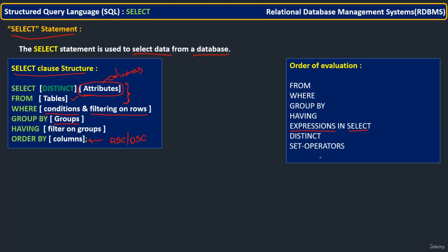And after that, if you have set operators — set operators are like UNION, INTERSECTION, DIFFERENCE — we have different set operators. After the entire final data — rows are filtered, columns are filtered, everything is filtered — on that you are going to apply the set operators if you have them. Then after the final data is ready, even after set operators are completed, you are going to display the data in a specific order — that may be ascending or descending — based on the ORDER BY clause. So this is the order of execution whenever you have a SELECT statement.